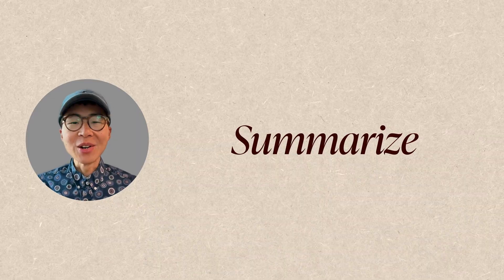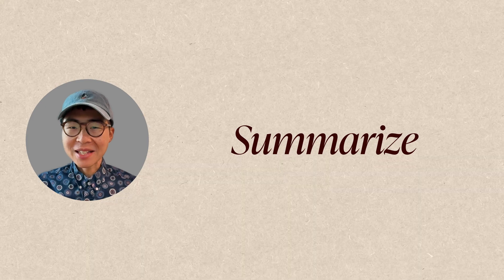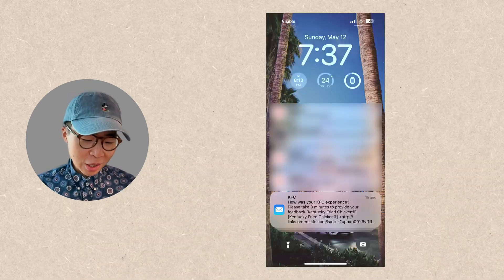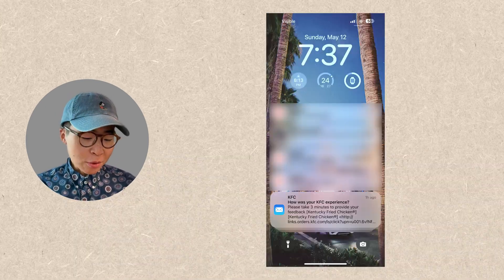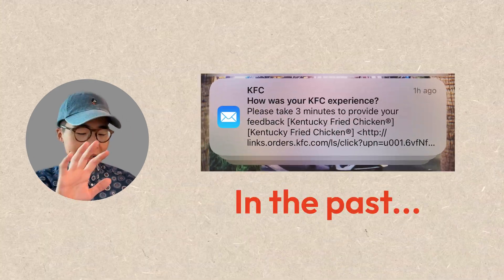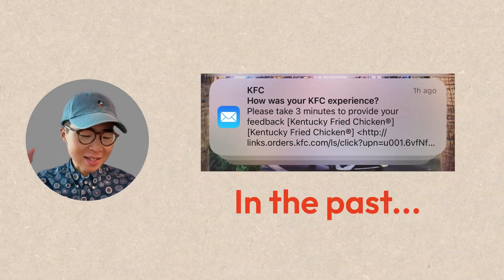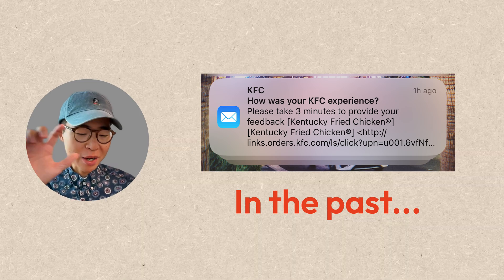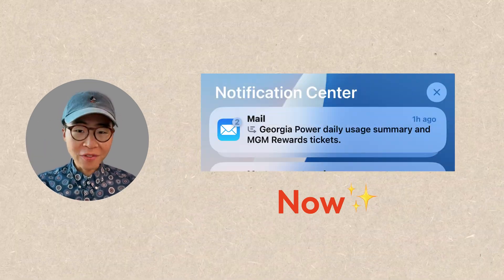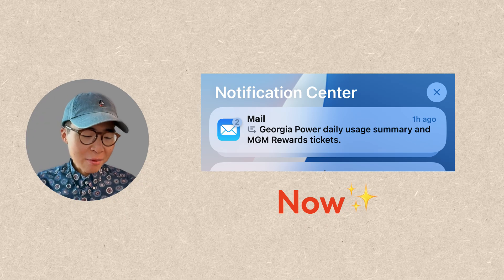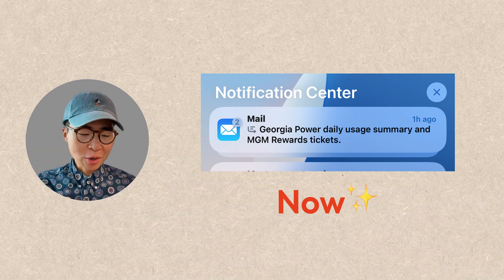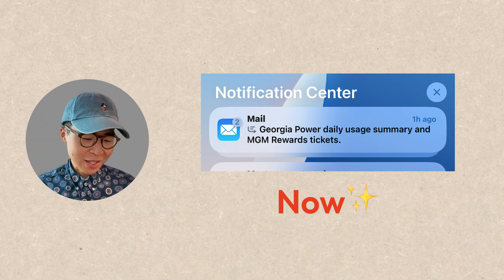First, you are going to be able to summarize basically everything. For example, in the notification center, if you received a bunch of emails, in the past they are all going to show up in one stack and you are going to see the preview of the first email. But now, your phone is going to summarize everything into one message, showing you what those emails are about.